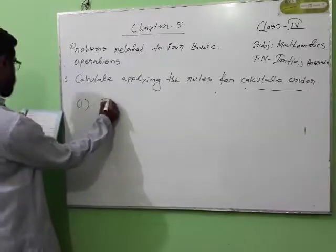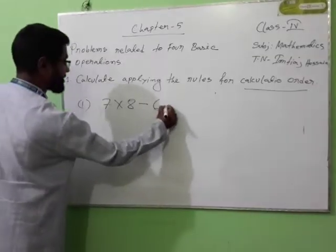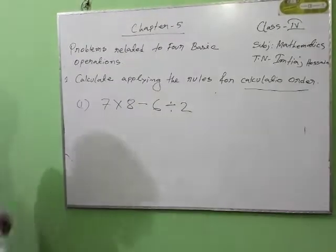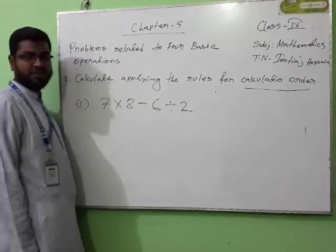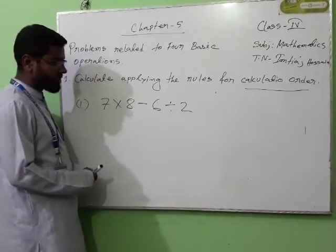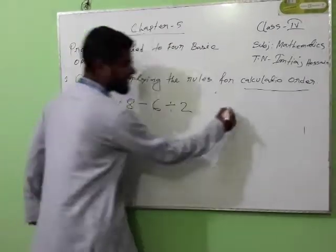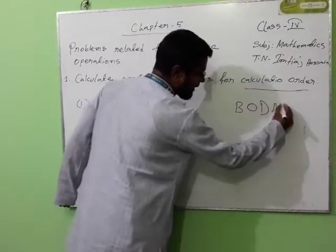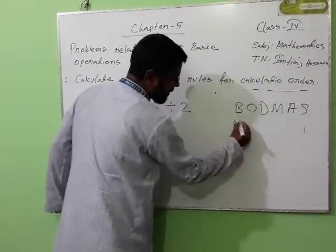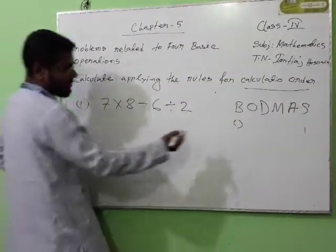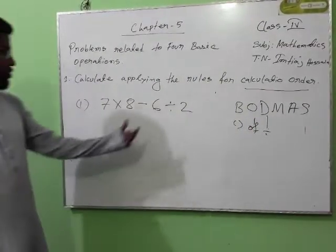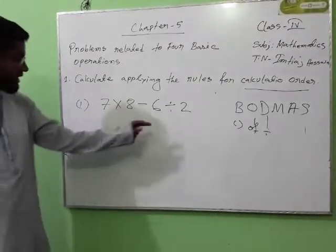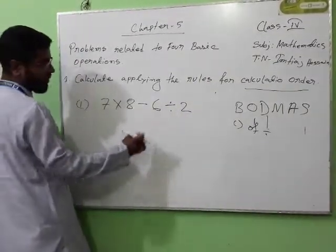Number one. Seven multiply eight minus six divided by two. Here there are three operations. Which operation will we do first? We need to check B-O-D-M-A-S. Bracket — is there any bracket? No. Of? No. Division? Yes, there is division. So we need to do division work first. That means these two digits, we will make one number. Six divided by two equals three.